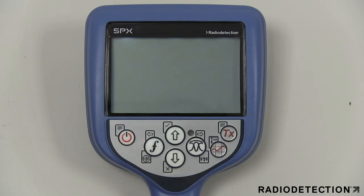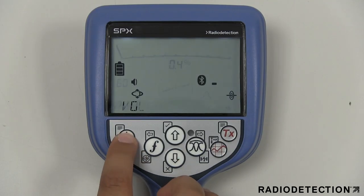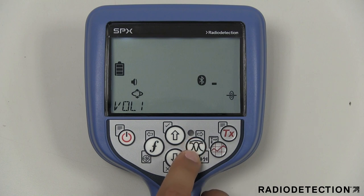There are 16 menu options available on the Precision Locator range that all follow the same format. The Vol menu option allows you to adjust the speaker volume from 0 to 3.